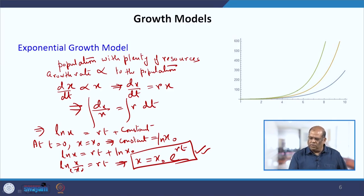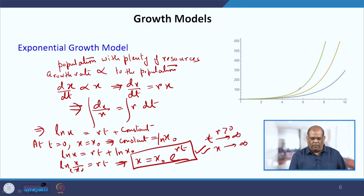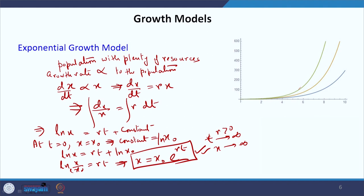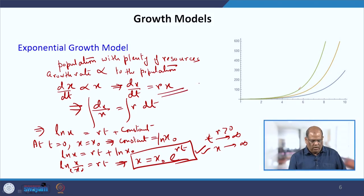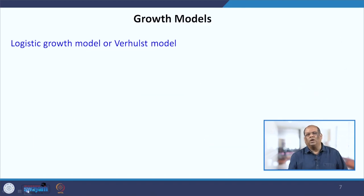However, as you can see, this is sort of unbounded — if r is positive, as t increases, x also increases. Generally, we do not use this assumption unless needed, because unbounded growth does not capture the real-life scenario. That is why, unless the model demands it, we generally avoid the exponential growth model and prefer the more realistic logistic growth model.